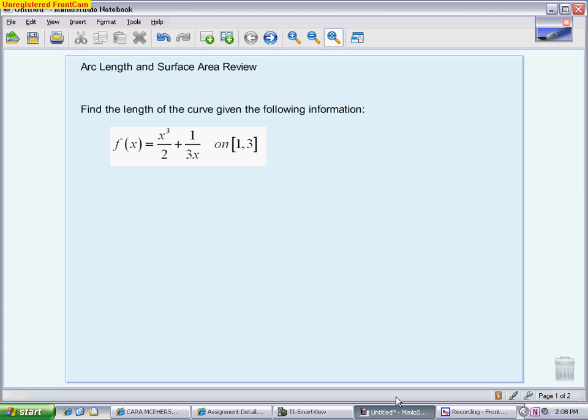So the first one says find the length of the curve given the following information, and that's usually the wording that the test will use as well. The first thing you need to do is be able to take the derivative of this function. So I made one that was kind of messier for this. My derivative is a power rule, power out front, power 1 less. So the derivative of my first term is 3x² over 2. The second one, if you think of it as 1/3 x to the negative 1, you're going to do power out front which is going to make it negative. Power 1 less is going to make it squared in the denominator.